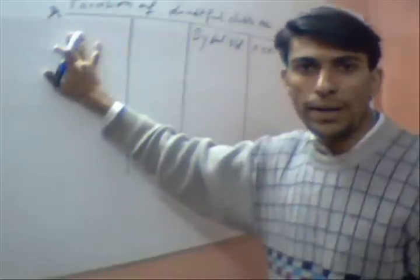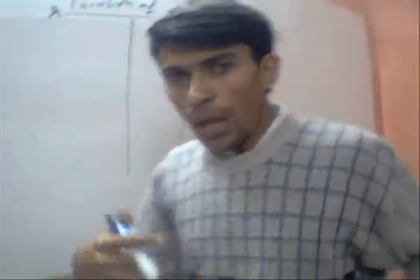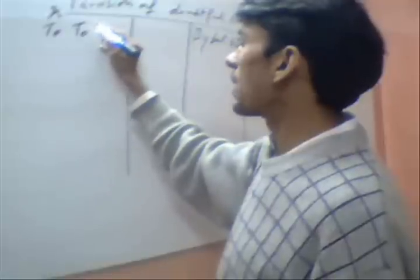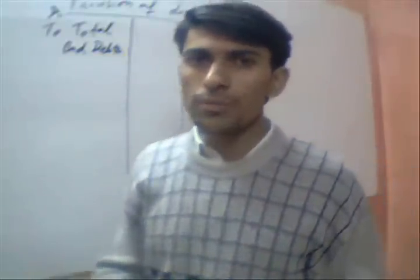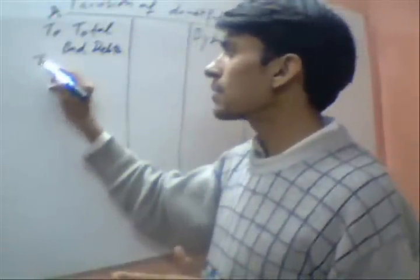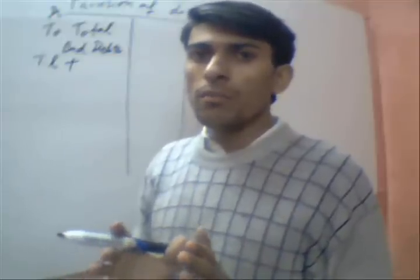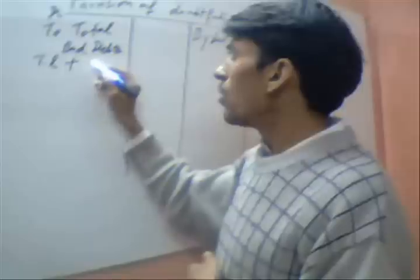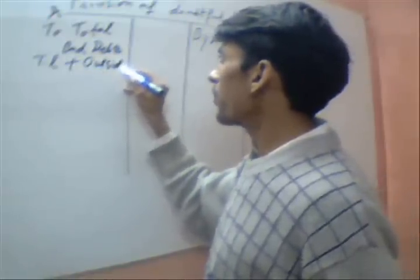Now you have to write the total amount of bad debts on the debit side, because actual bad debts have to be deducted from our previous balance of provision of bad debts. Open your books and see what is the amount of bad debts in the trial balance, plus the bad debts which will not be treated at the date of making the final account — write those outside trial balance bad debts here as well.